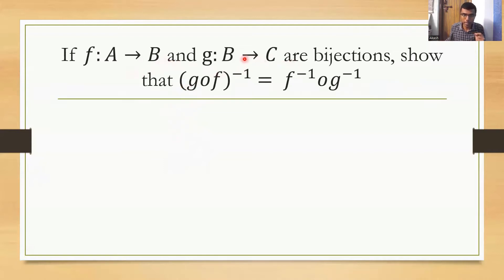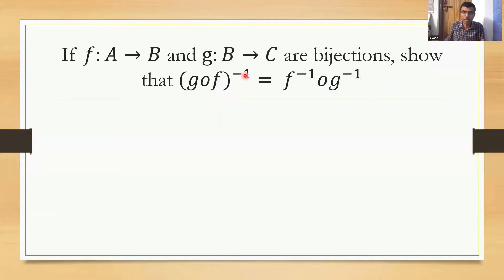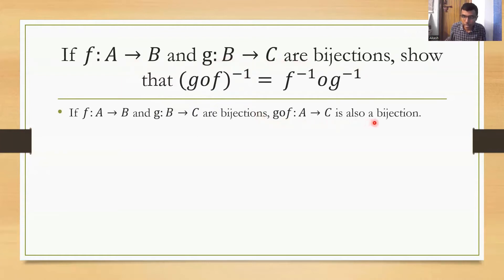We are given that f maps A to B and g maps B to C are bijections. We need to show that (g∘f)⁻¹ equals f⁻¹∘g⁻¹. To do this, I need to start by finding g∘f. First, since f maps A to B and g maps B to C are bijections, therefore g∘f maps A to C is also a bijection — this was the first theorem, so we can state that directly.